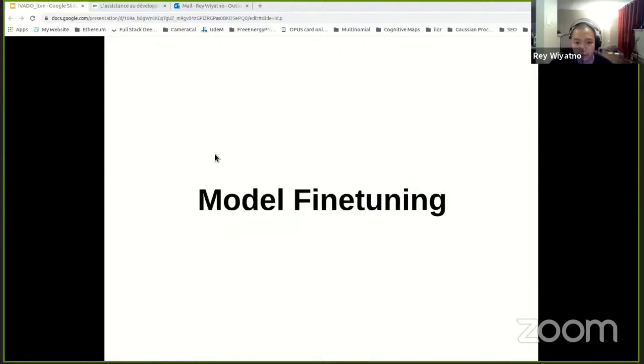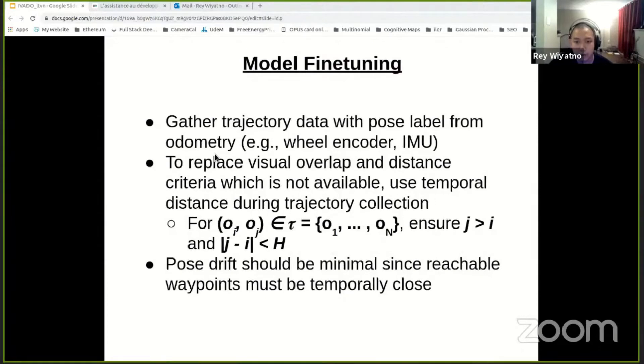And finally, let's talk about how we can update the model. So to collect the fine-tuning data set, we gather trajectory images along with the associated pose odometry, which is commonly available. And to determine reachability, we use the same criteria as when labeling data in simulation.